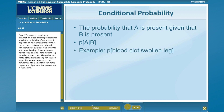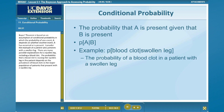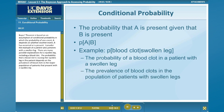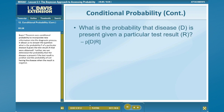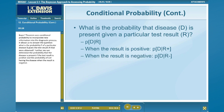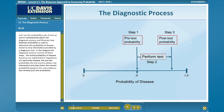Consider the example of a patient who presents with a swollen leg. There are many possible explanations for a swollen leg, including a blood clot. The probability that a blood clot is causing the swollen leg depends on the prevalence of blood clots in the larger population of patients that present with a swollen leg. Bayes' theorem uses conditional probability to incorporate new information into the diagnostic process. It allows us to answer the question: what is the probability, p, of a particular disease, d, given the test results, r, that were obtained? Further, we can determine the probability that the disease is present if the test result is positive, and the probability of not having the disease when the result is negative. Let's use the probability scale of 0 to 1 to schematically depict the diagnostic process and illustrate how Bayesian probability is used to determine the probability of disease based on new information provided by a diagnostic test.